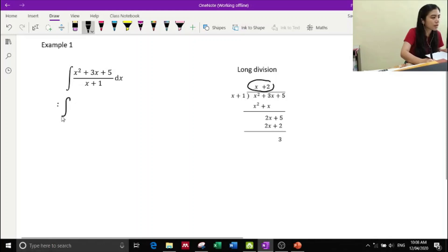So the next line, you will have the integration of x plus two plus three, the remainder that is three, divided by this x plus one. Once you have this, basically you have something that is very simple for you to integrate.